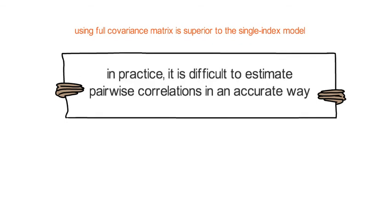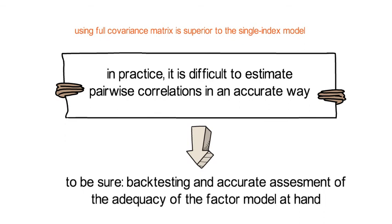But in practice it's difficult to estimate pairwise correlations in an accurate way. It's therefore to be expected that a low-dimensional factor model will be less prone to the garbage-in garbage-out problem. But in order to be really sure, one needs to do careful backtesting and accurate assessment of the adequacy of the factor model at hand.